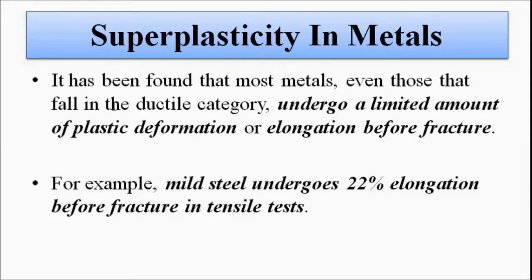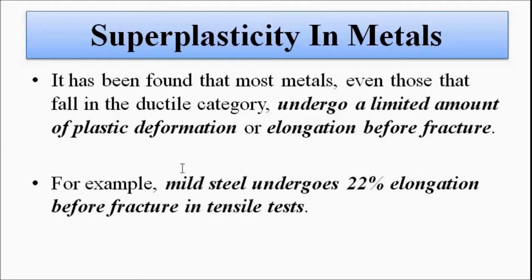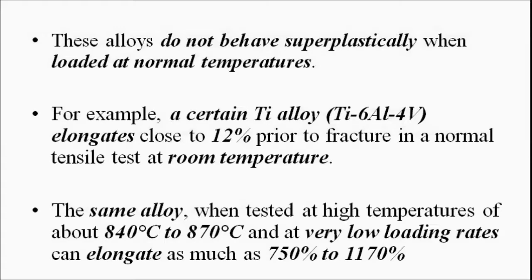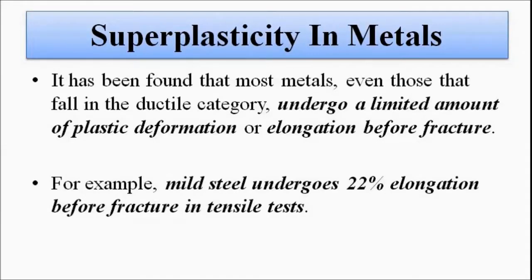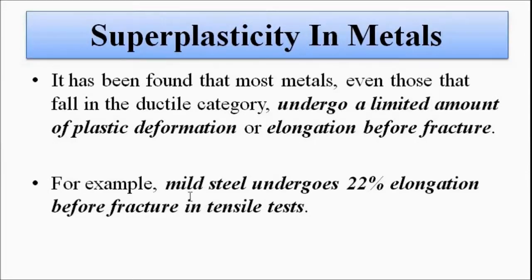Ductile materials can undergo more and more elongation while withstanding high stress values, before undergoing fracture. This separates them from brittle materials, which fracture at much lower values of stress and elongation. Super plasticity is the concept that when stress is applied at normal temperatures, metals undergo less elongation or less plastic deformation, but when stress is applied at much higher temperatures, they undergo more plastic deformation or more elongation.